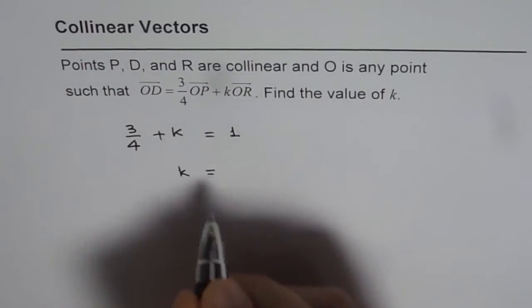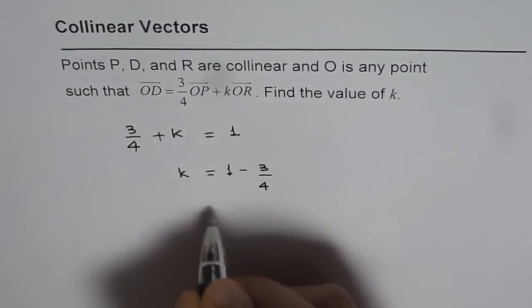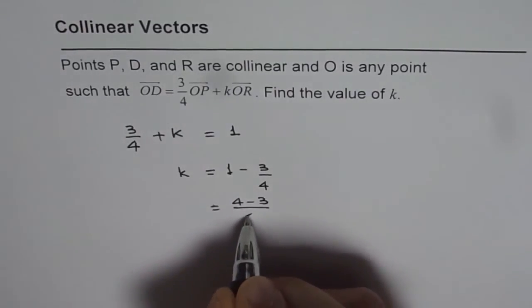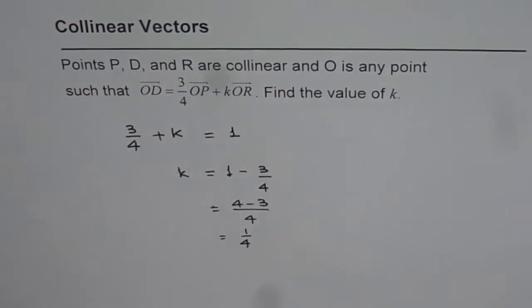From here we get k equals 1 minus 3/4, or 4 minus 3 divided by 4, or 1/4. So that is our answer.